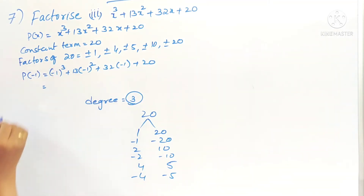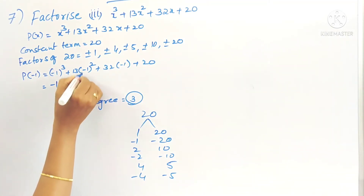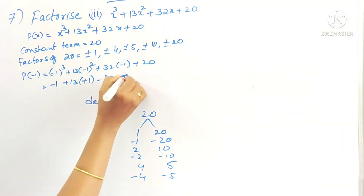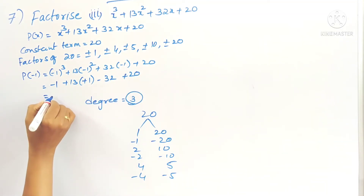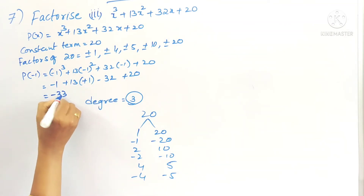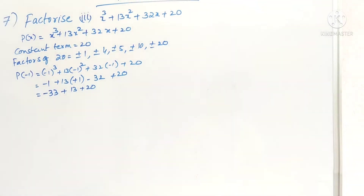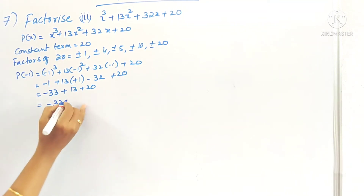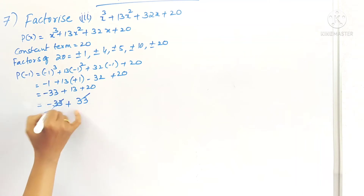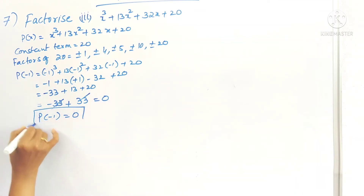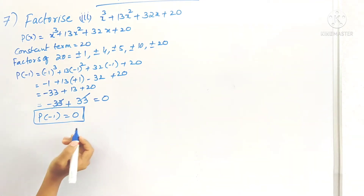A negative number raised to an odd power is minus, and to an even power is plus. So p(−1) = (−1)³ + 13(−1)² + 32(−1) + 20 = −1 + 13 − 32 + 20 = 0. The remainder is 0.